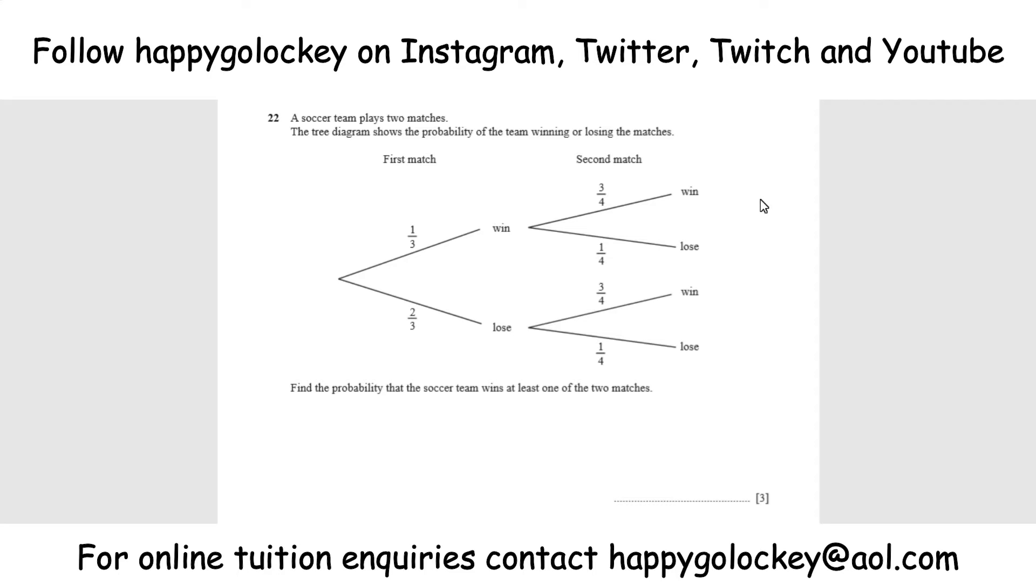A soccer team plays two matches. The tree diagram shows the probability of the team winning or losing the matches. The first match: one third win, two thirds lose. The second match: three quarters win, one quarter lose. Find the probability that the soccer team wins at least one of the two matches.